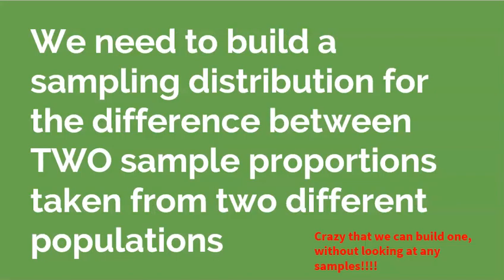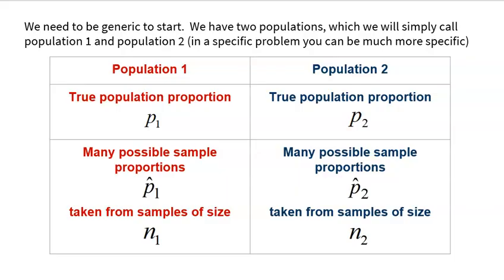We need to build a sampling distribution for the difference between two sample proportions taken from two different populations. And just like in the last topic, we're going to be able to build this sampling distribution without actually looking at any samples. Before we begin, note that there will be a lot more numbers in these problems because we now have two different populations. We can generically label them population one and population two.